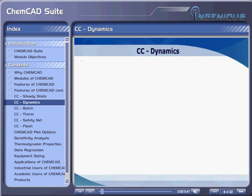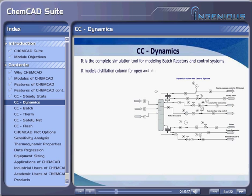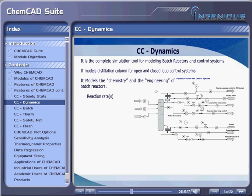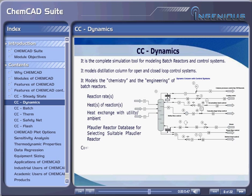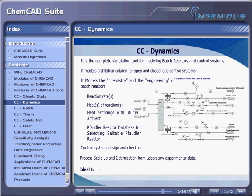CC Dynamics. It is the complete simulation tool for modeling batch reactors and control systems. It models distillation columns for open and closed loop control systems, and models the chemistry and engineering of batch reactors including reaction rates, heats of reactions, heat exchange with utility or ambient, and a Pfaudler Reactor Database for selecting suitable reactors. It covers control systems design and checkout, process scale-up and optimization from laboratory experimental data. It is ideal for users who want to design or rate dynamic processes.